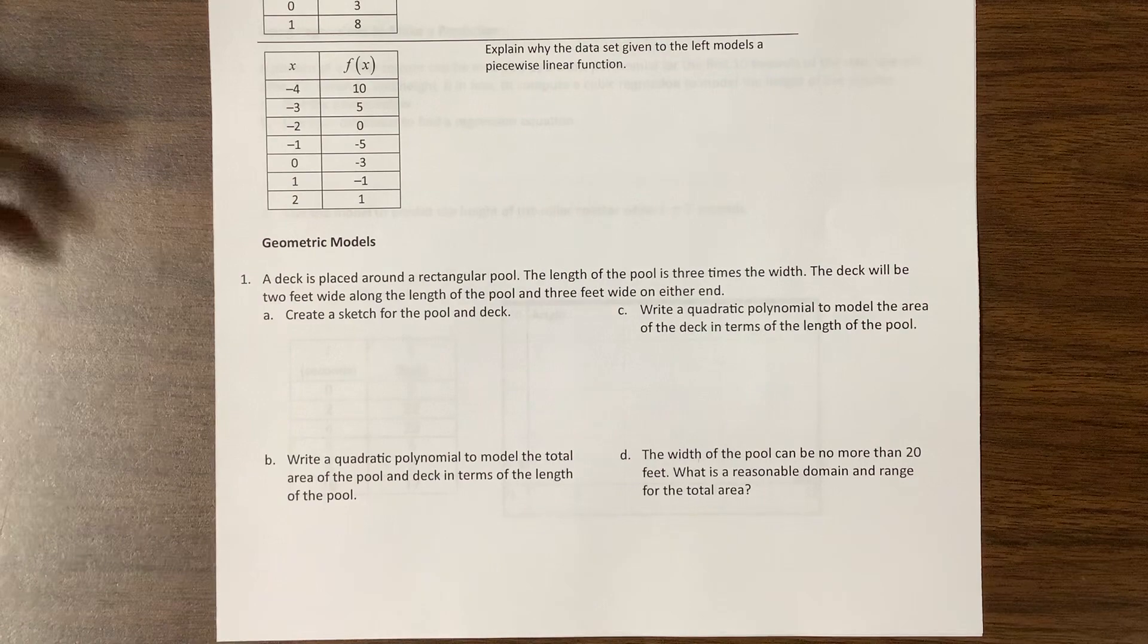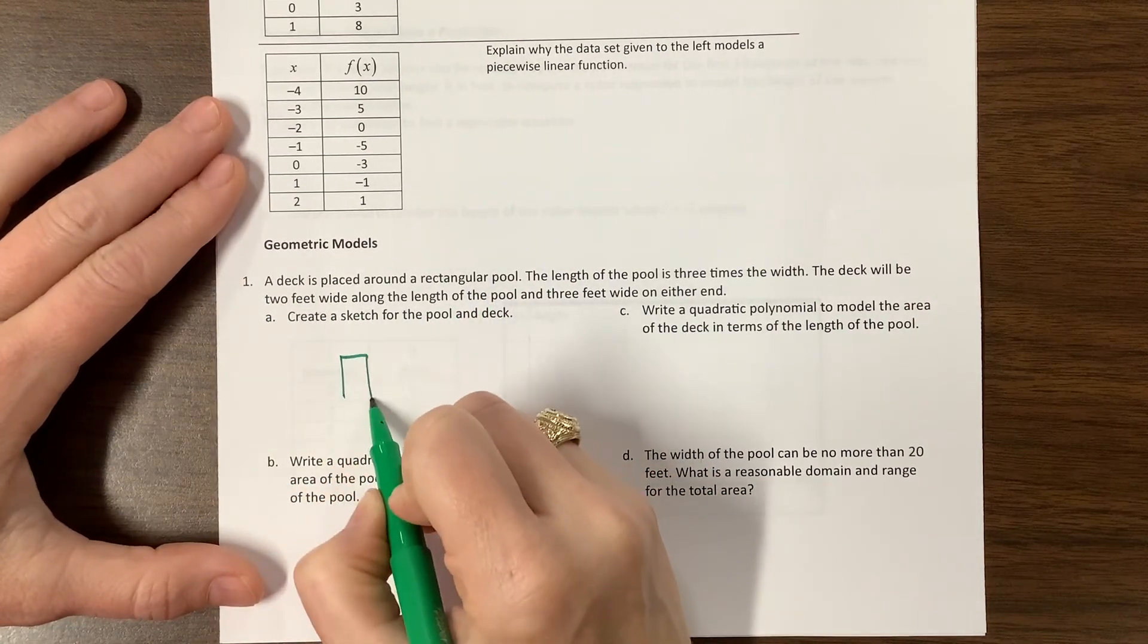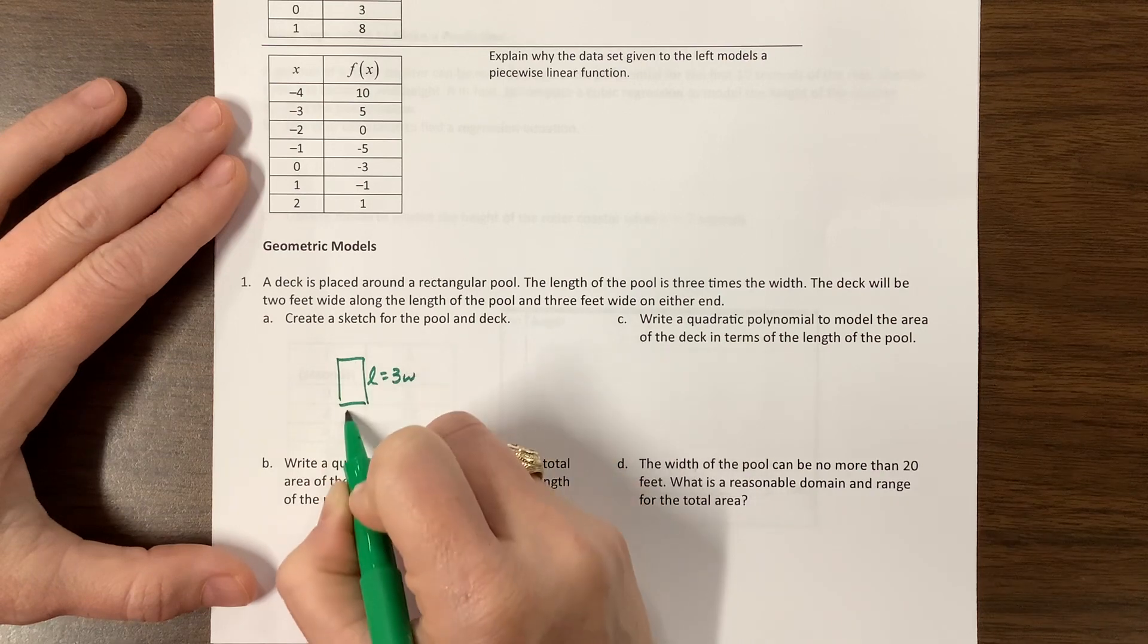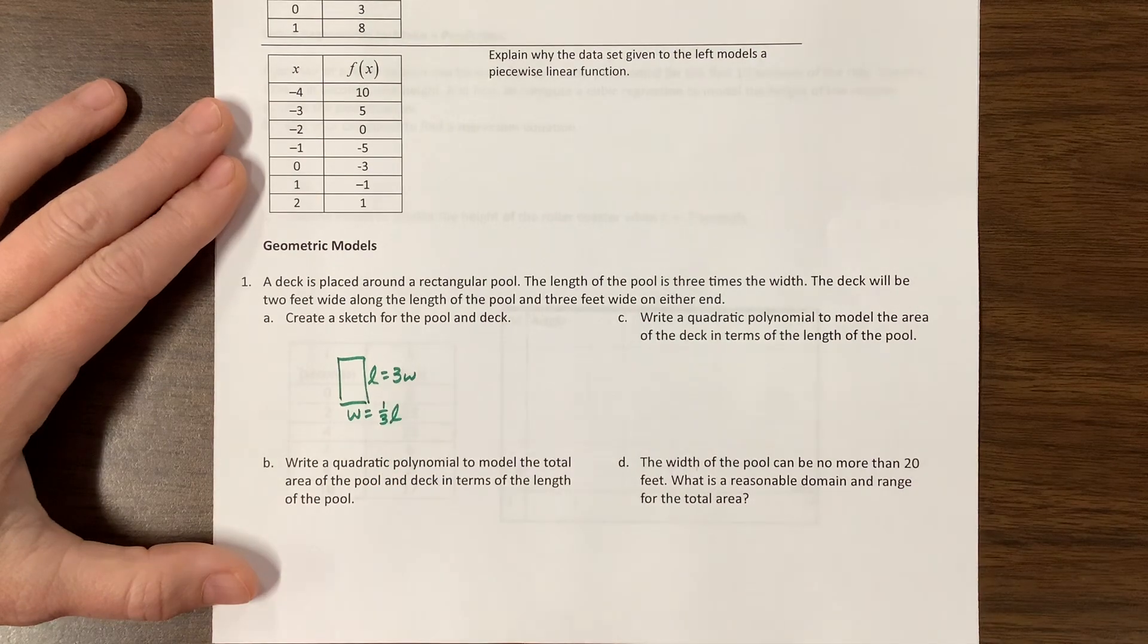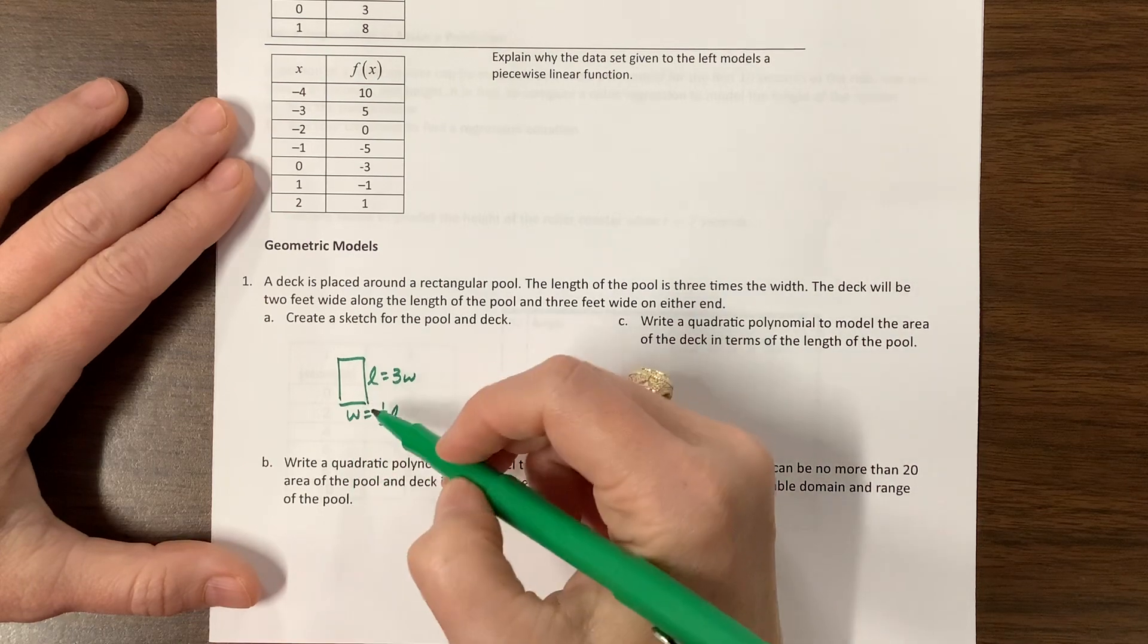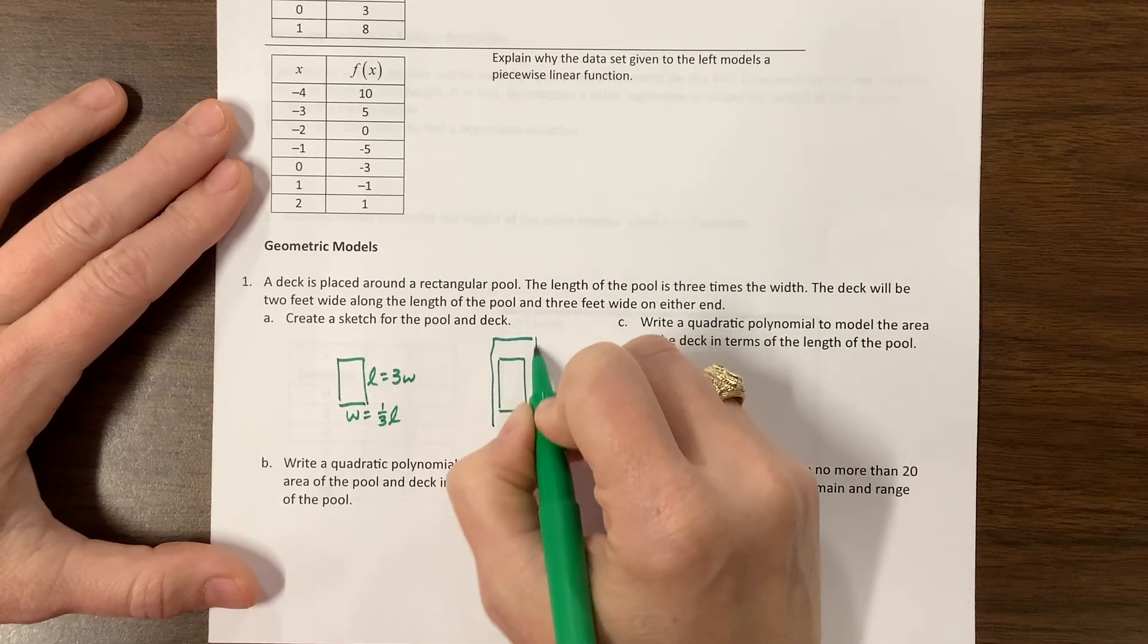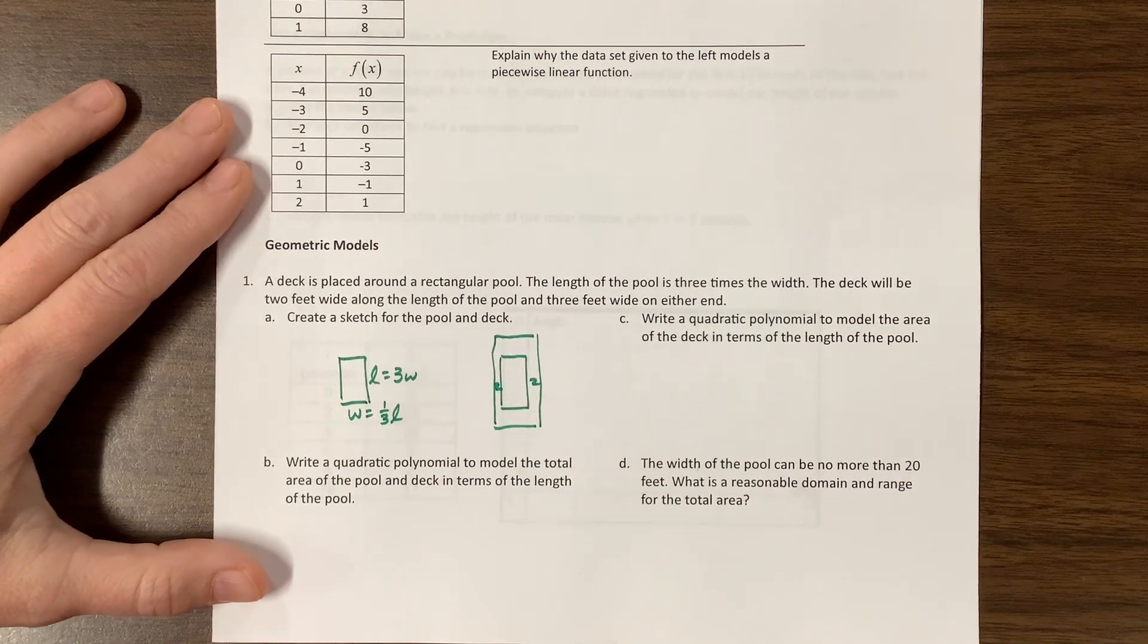Sometimes they'll give us situations where it's a geometric model. So they're telling us a deck is placed around a rectangular pool. Okay, so here's our rectangular pool. The length of the pool is three times the width. So length equals 3w. Here is w, which would actually be equal to a third of the length. And then they tell us the deck will be two feet wide along the length of the pool. So two feet wide along the length, to me, means that we take this rectangle. This width is two, this width is two. I didn't draw it to scale, I'm so sorry.